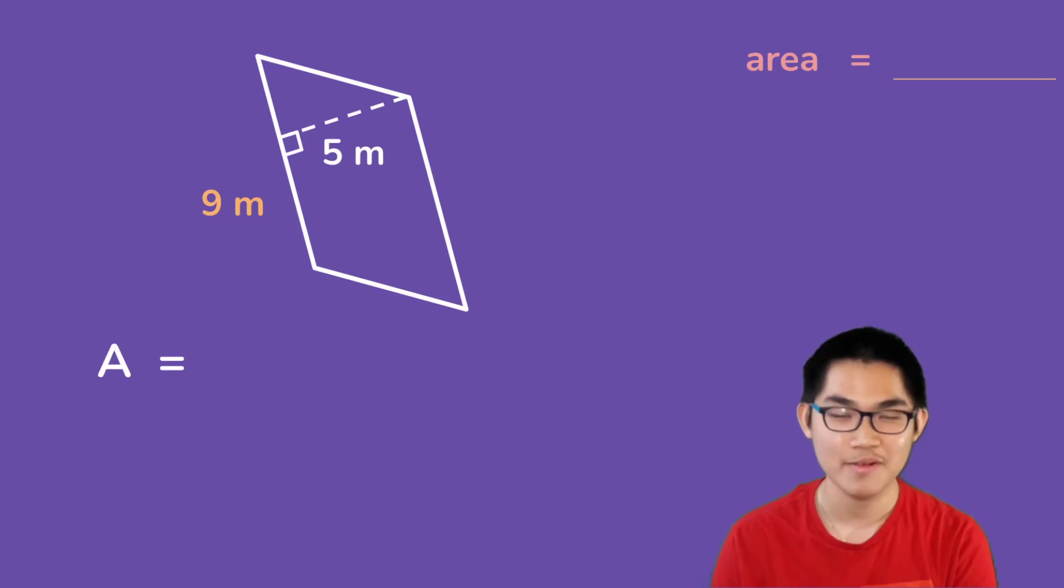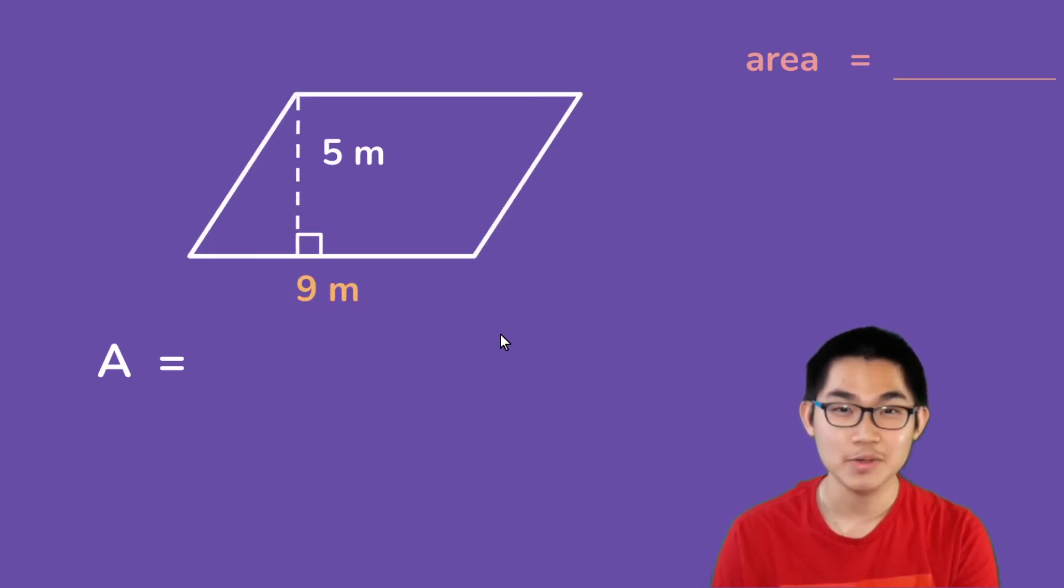How about this parallelogram? Well, in this example the shape is a bit rotated, so we can always put it back into the way we know it, right? So this is the same parallelogram and we want to find the area of this parallelogram.